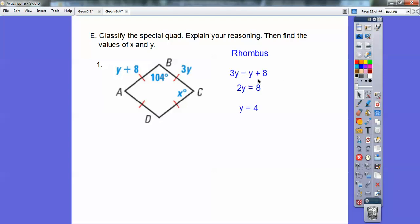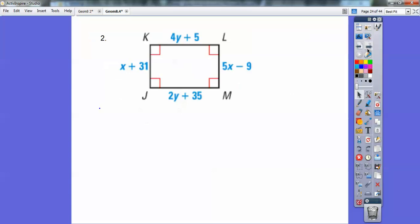3y equals y plus 8. So then I subtracted y to get 2y equals 8. Okay, and then y equals 4. And then over here, these consecutive angles are supplementary. So x is the rest of the 180. So I just did 180 minus 104 and got 76.